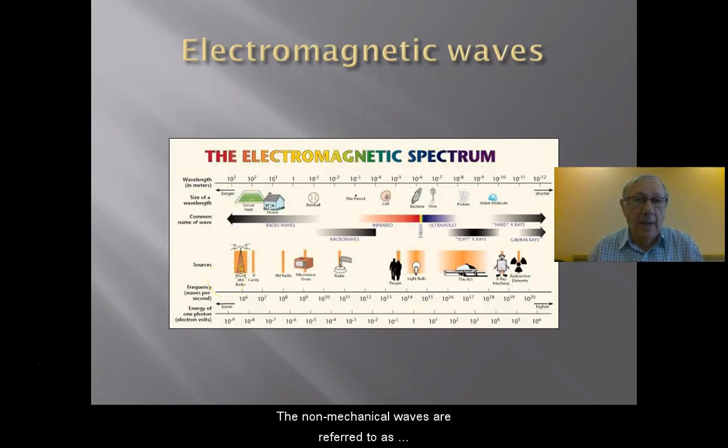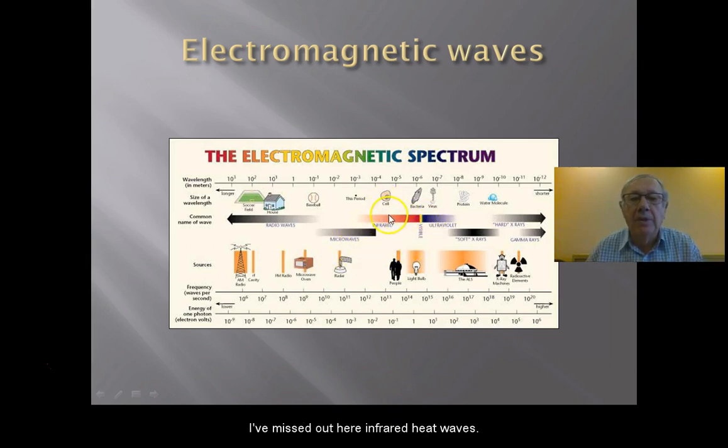The non-mechanical waves are referred to as electromagnetic waves. We start off with radio waves. These are radio waves here coming out from an antenna. Then we have other waves such as microwaves which we use in a microwave oven. Then we have lights here for example. Oh I've missed out here infrared. So heat waves. If you're standing out in the sun and you feel warm, then you are experiencing infrared rays. Now those rays they are non-mechanical waves.